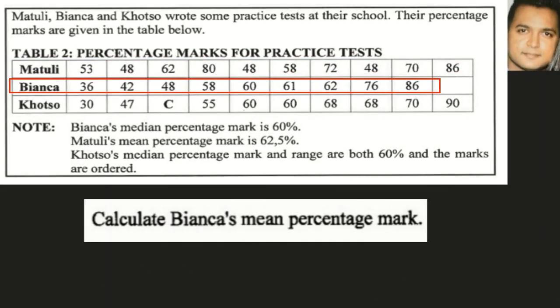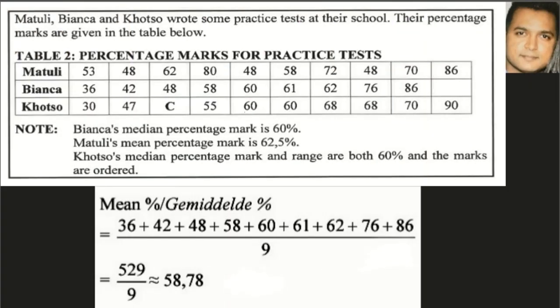We are asked to calculate Bianca's mean mark. The term mean is another word for average — we add up all the marks and divide by the number of marks. Looking at Bianca, there are only nine marks given, so we take all those values and divide by nine.